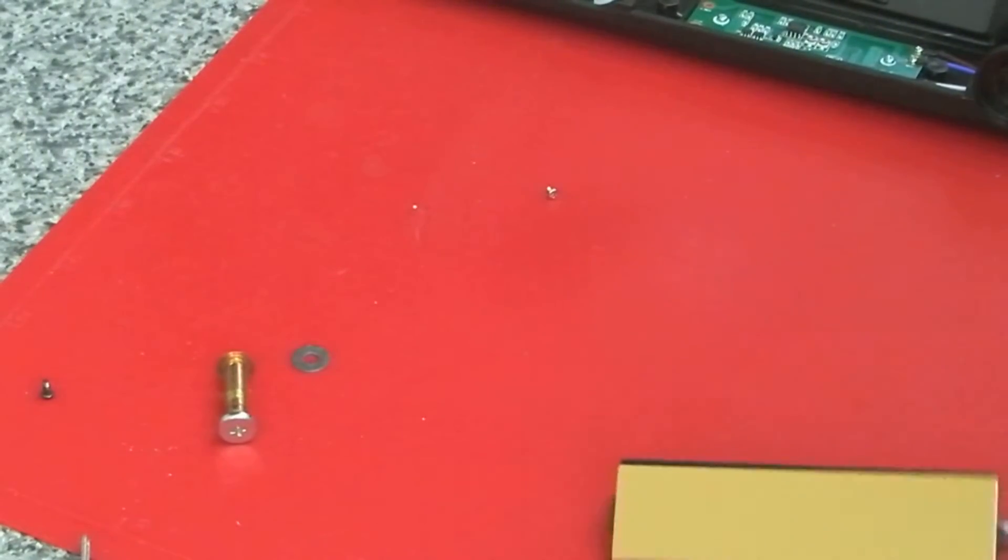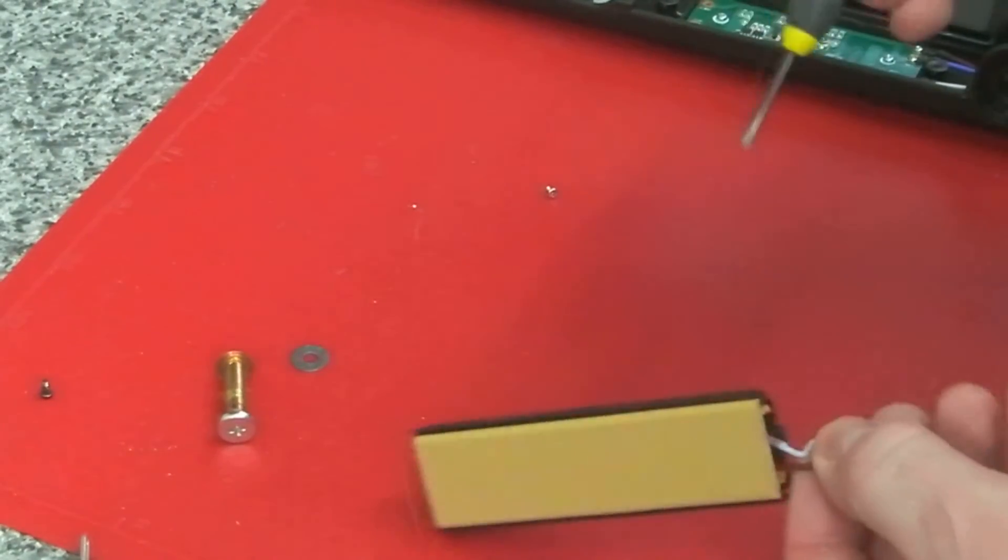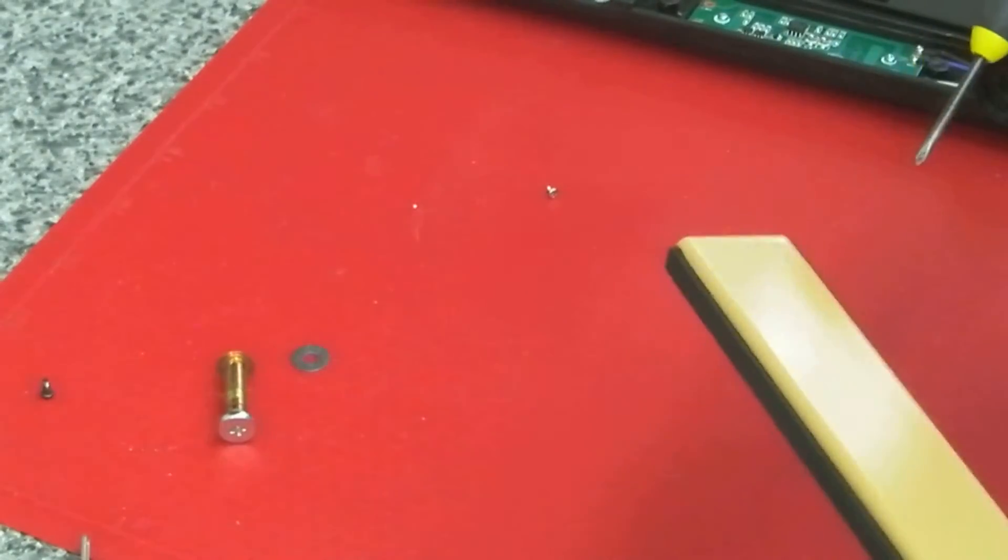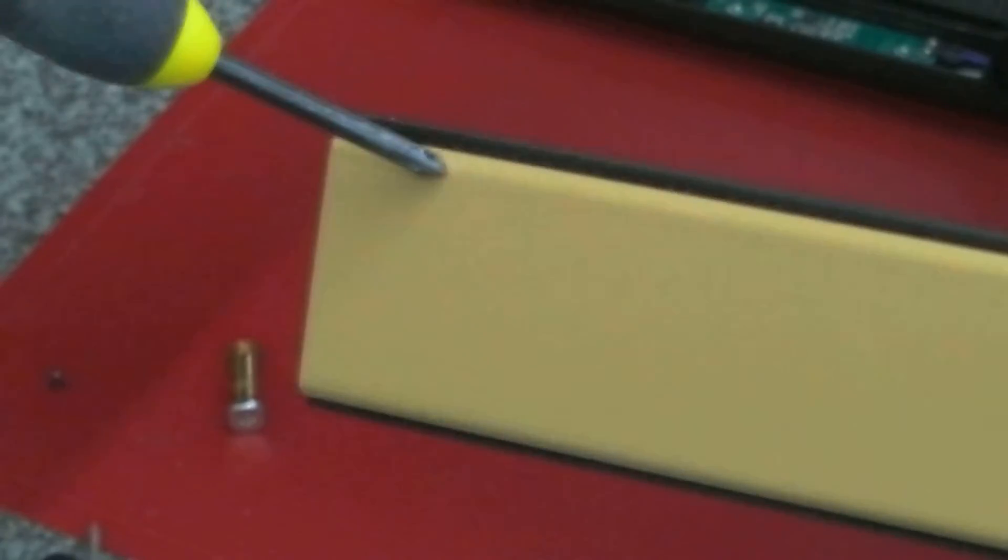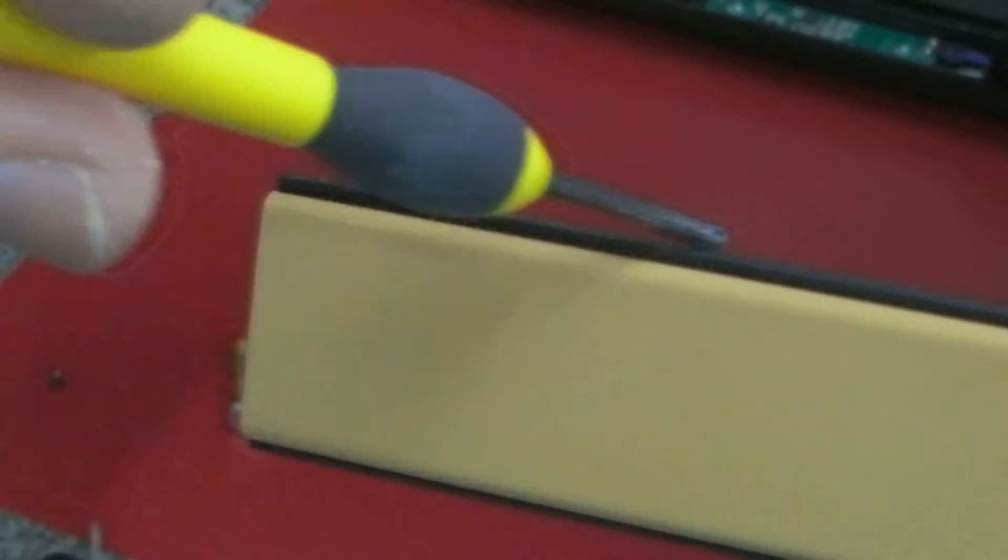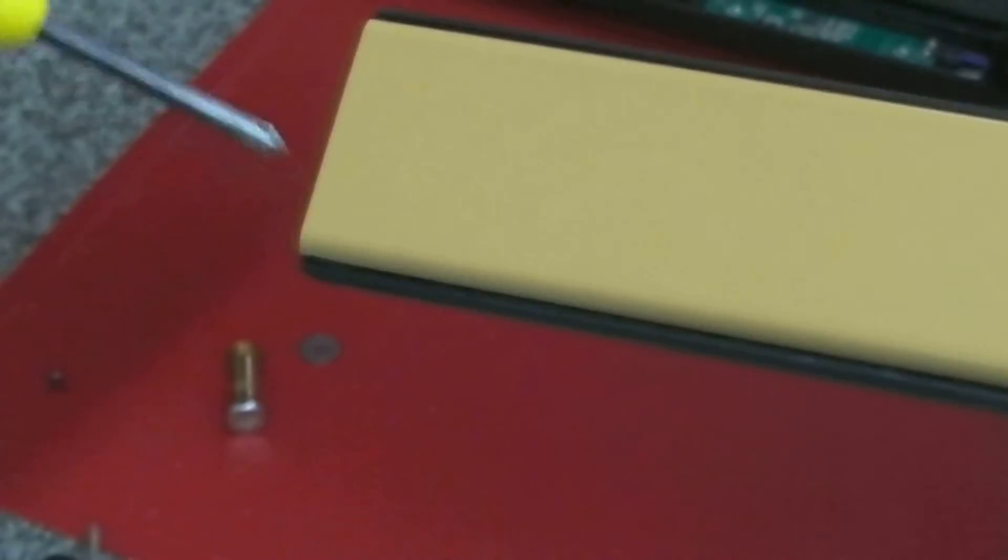But if you look closely in the gap between the plastic here and the ceramic plate, you can see that the plastic started to melt in that area on both sides. So clearly,